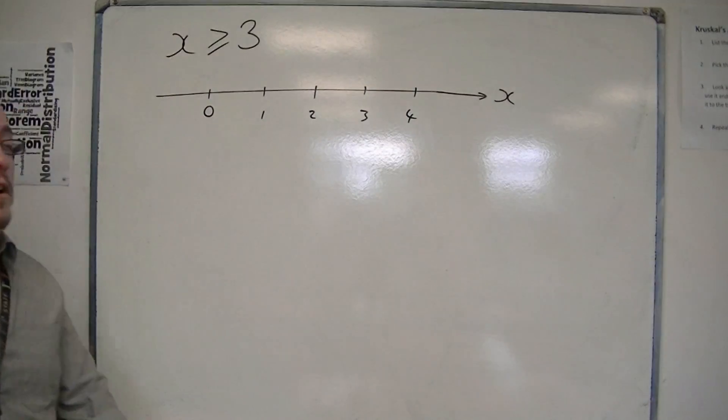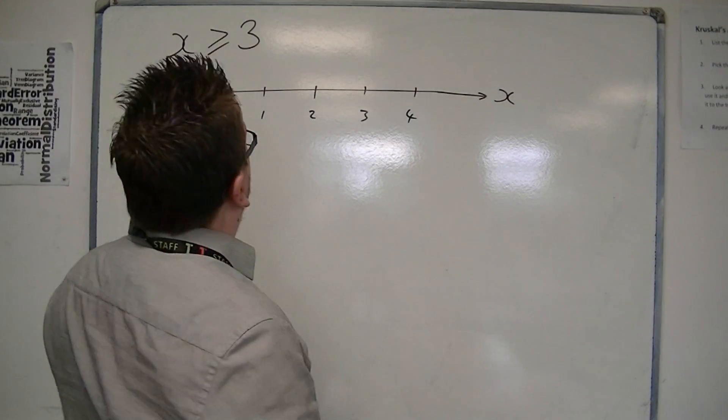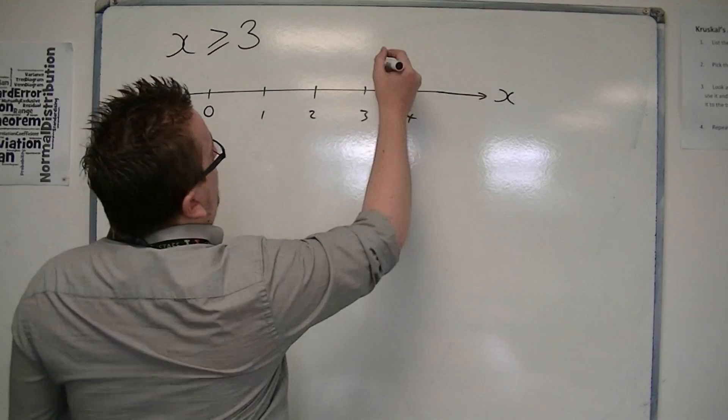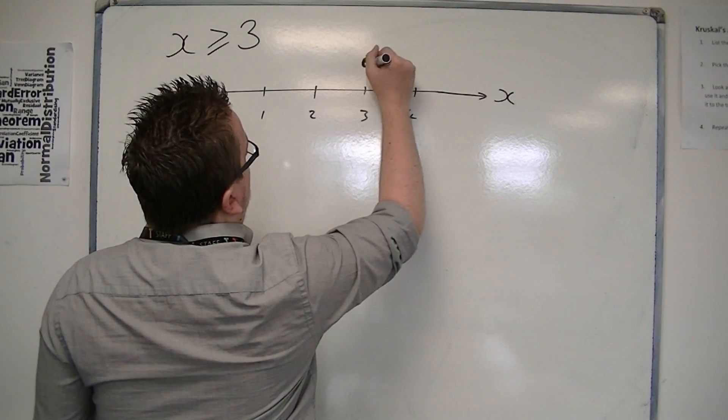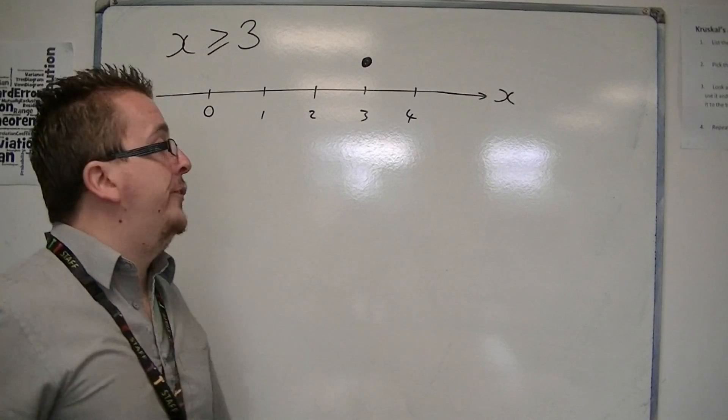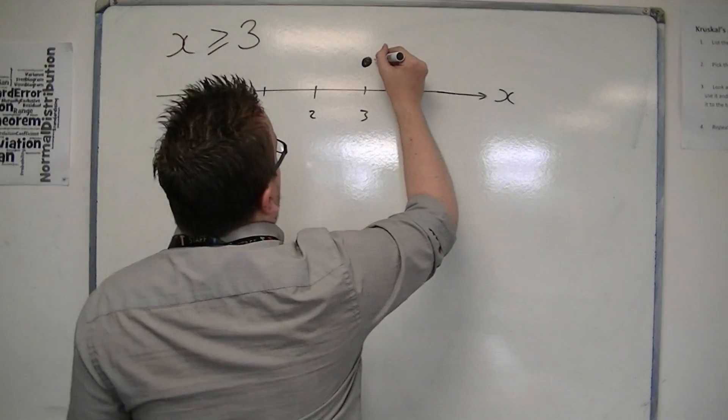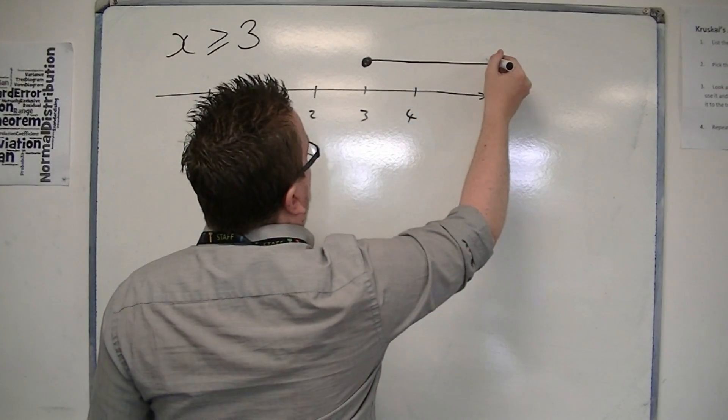This is the number line for x. And we can say, well, x can be 3, which we represent with a solid dot, and anything above 3.